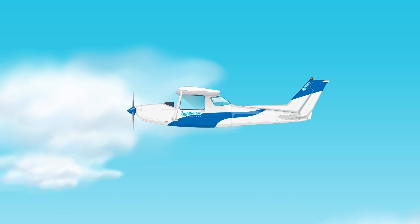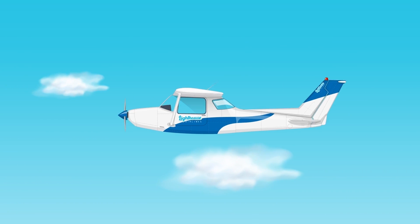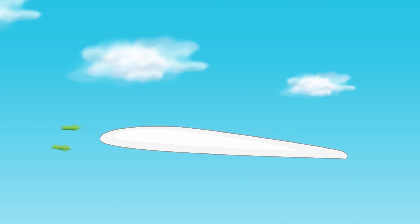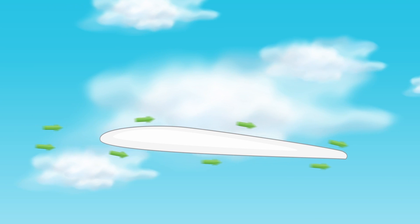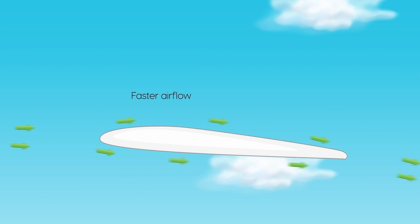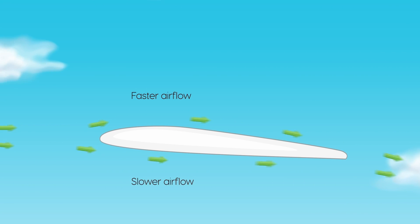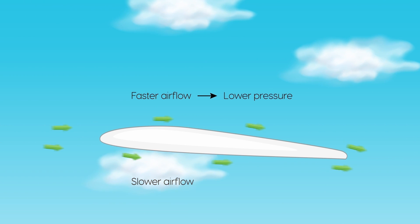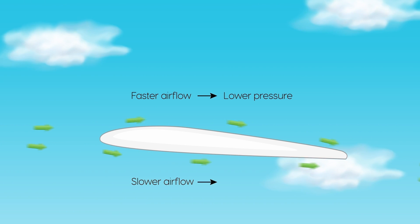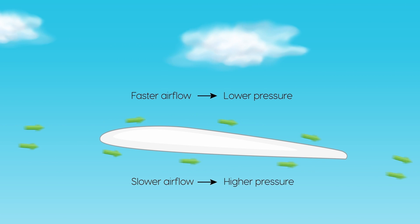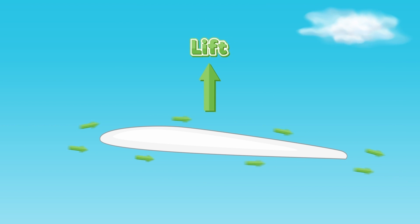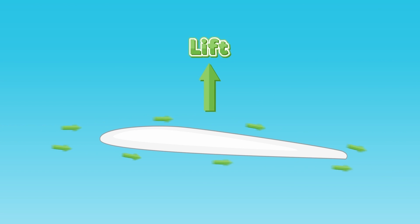As the aeroplane moves forward, the wings cut through the air and create a pressure difference. The top part of the wing has a curved shape, which makes the air go faster, while the bottom of the wing has a flat shape, which makes the air go slower. This difference in speed causes a lower pressure on the top of the wings and a higher pressure on the bottom. The result? Lift! A force that pushes up on the wings.